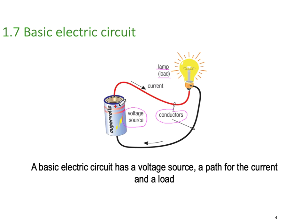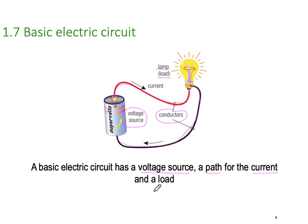Here we've got current flowing, and remember we're using conventional current flow. Current flows from the positive through our conductor up into the lamp, through the element, back down onto the conductor and then back to the negative side. So a basic electric circuit has four components: a voltage source, a path, current flowing through it, and a load.